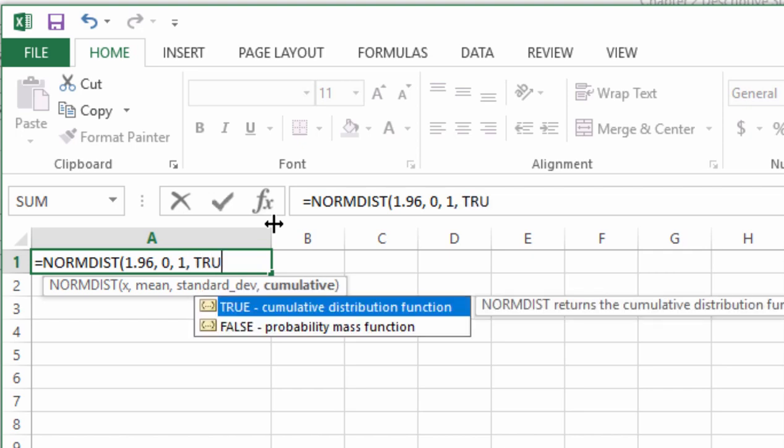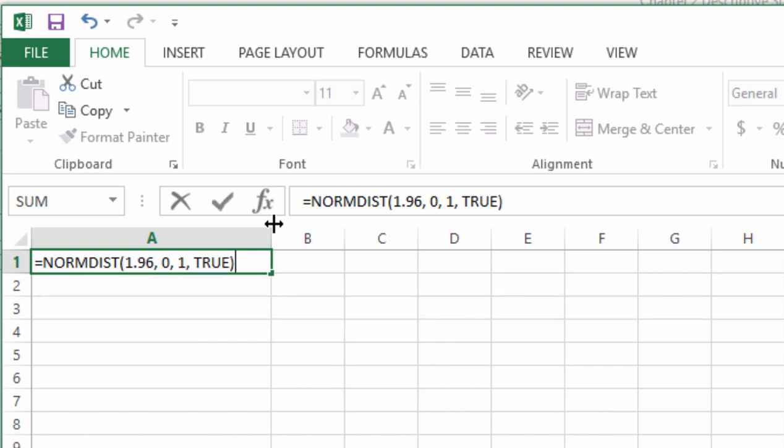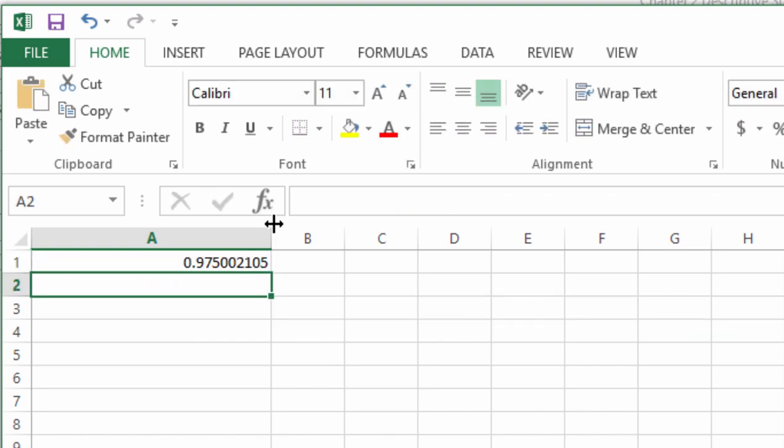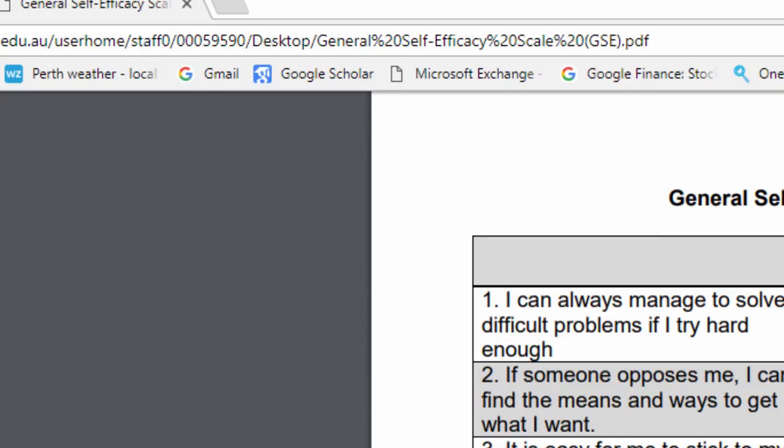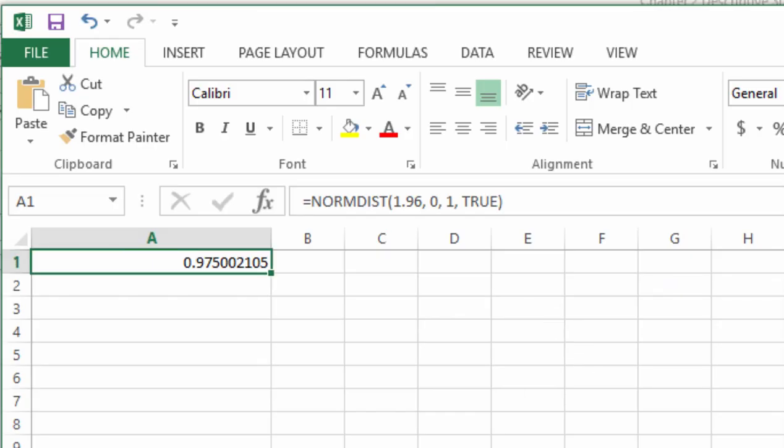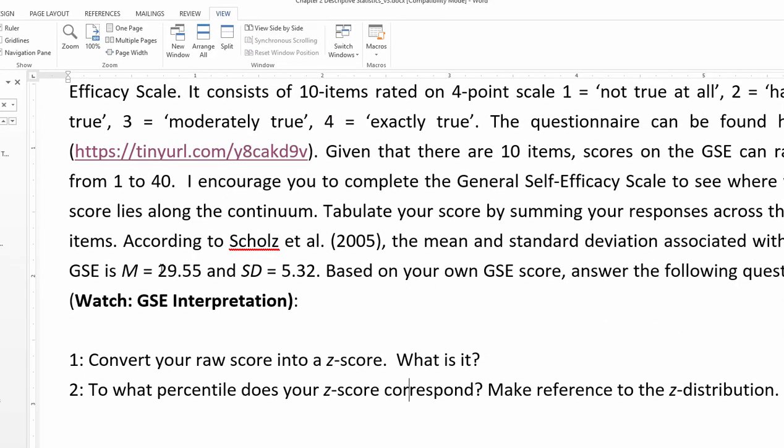And now I write true to use the cumulative portion of the function and what I get is 0.975, which means that 97.5 percent of the population scores equal to or lower than 40 on this scale. And that's a significant portion, so most people do not score as high as 40. In fact we know that most people score 29.55 or lower.